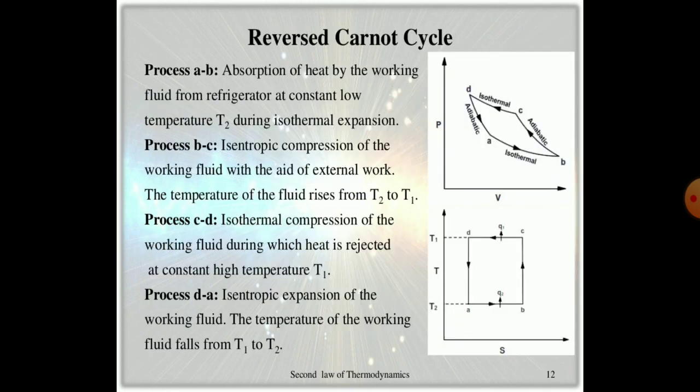If we consider the reverse Carnot cycle, process A to B: absorption of heat by the working fluid of the refrigerator at constant low temperature during isothermal expansion. Isentropic compression of the working fluid with extension work raises the temperature from T2 to T1. Process C to D: isothermal compression during which heat is rejected at constant high temperature.